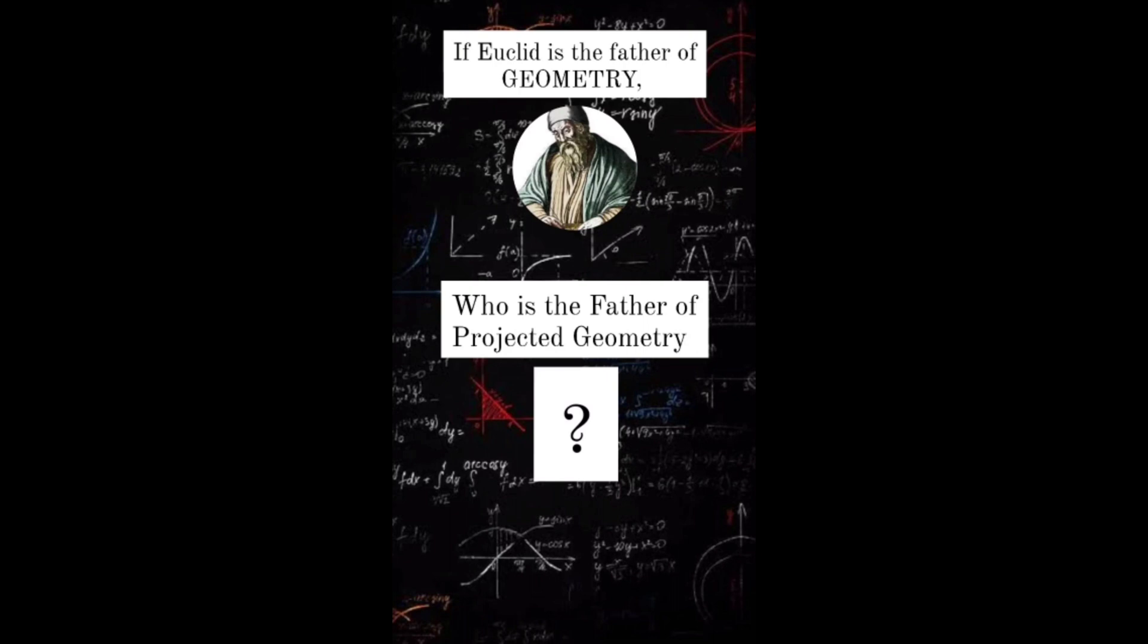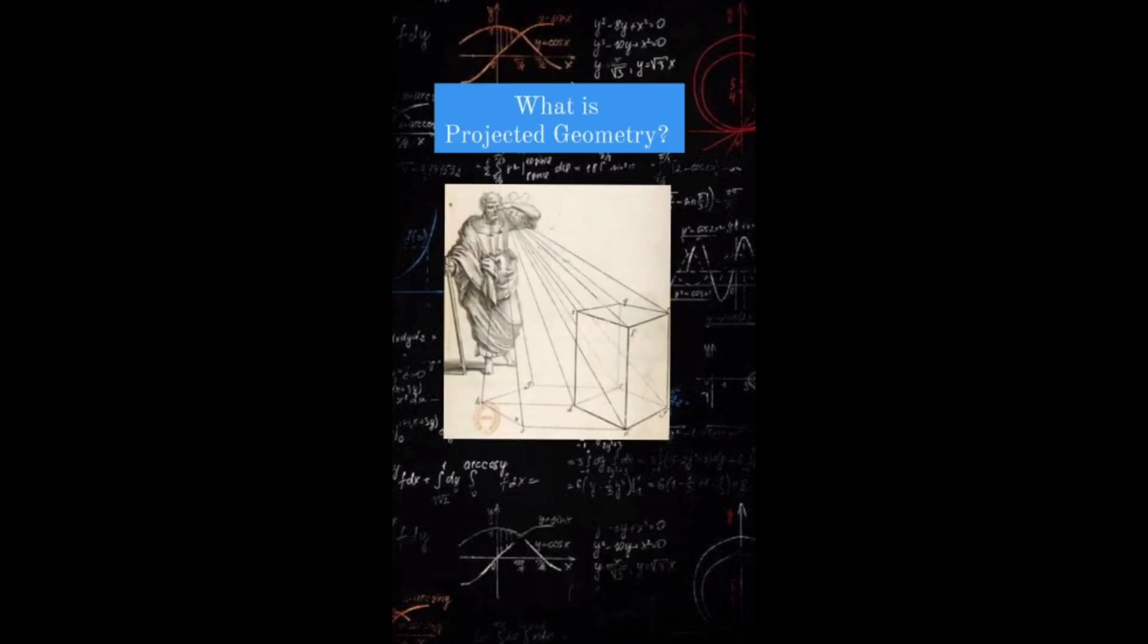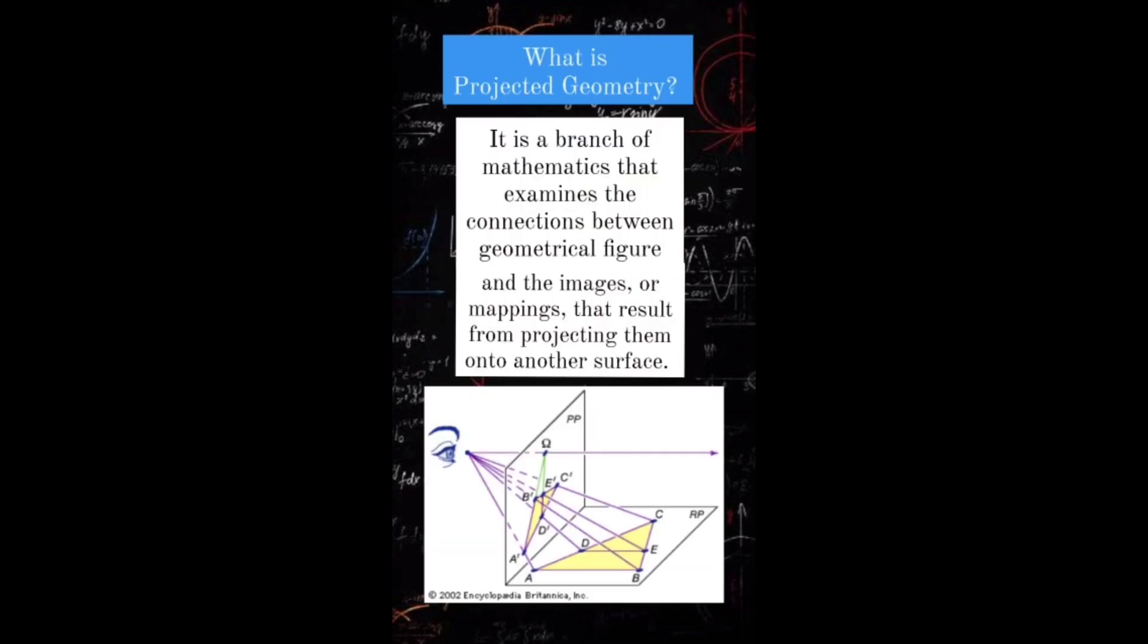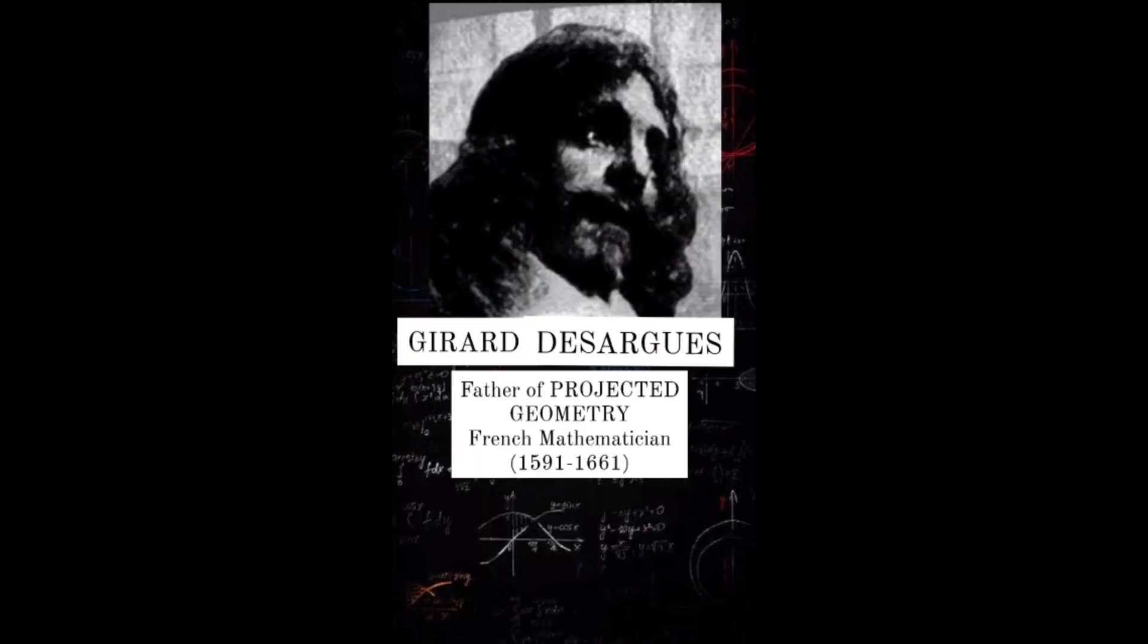If Euclid is the father of geometry, then who is the father of projective geometry? Projective geometry is a branch of mathematics that examines the connections between geometrical figures and the images, or mappings, that result from projecting them onto another surface.